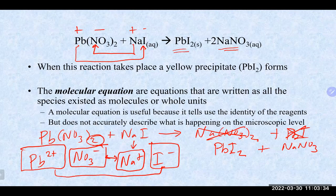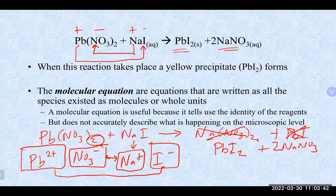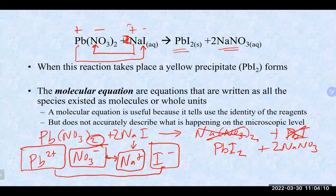To balance: there are two nitrates on the left, so a coefficient of 2 goes in front of sodium nitrate on the right, and then two sodiums on the right require a 2 in front of sodium iodide on the left. This is now correctly balanced. The key takeaway: always write correct formulas first, then balance — never try to do both simultaneously. It's a very common error.